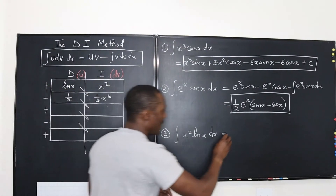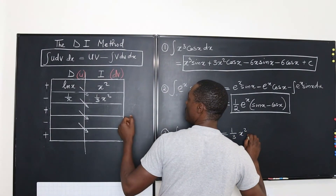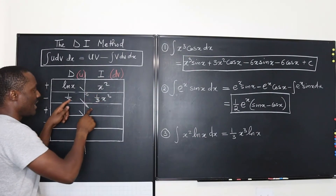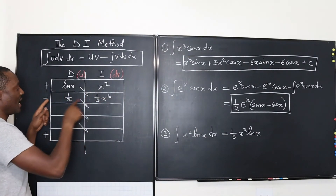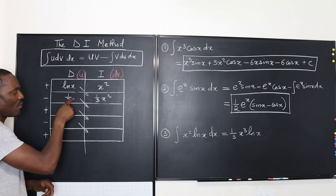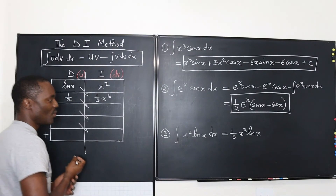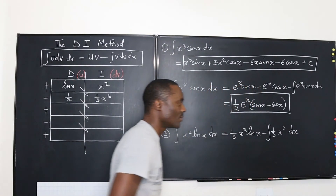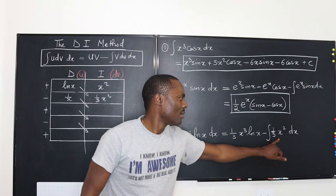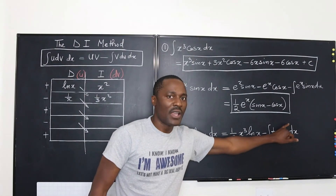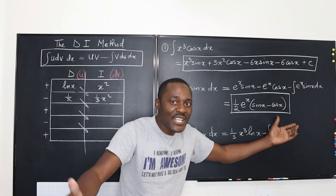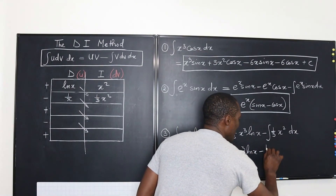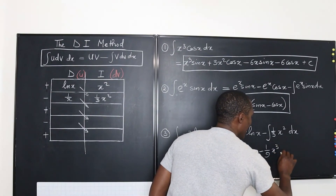So we can write this out as one third X cubed ln X. Then the second part will have a negative — if you multiply one over X by one third X cubed, you get one third X squared. So it would be minus the integral of one third X squared dx. The integral of that is one ninth X cubed. So our answer is one third X cubed ln X minus one ninth X cubed plus C.